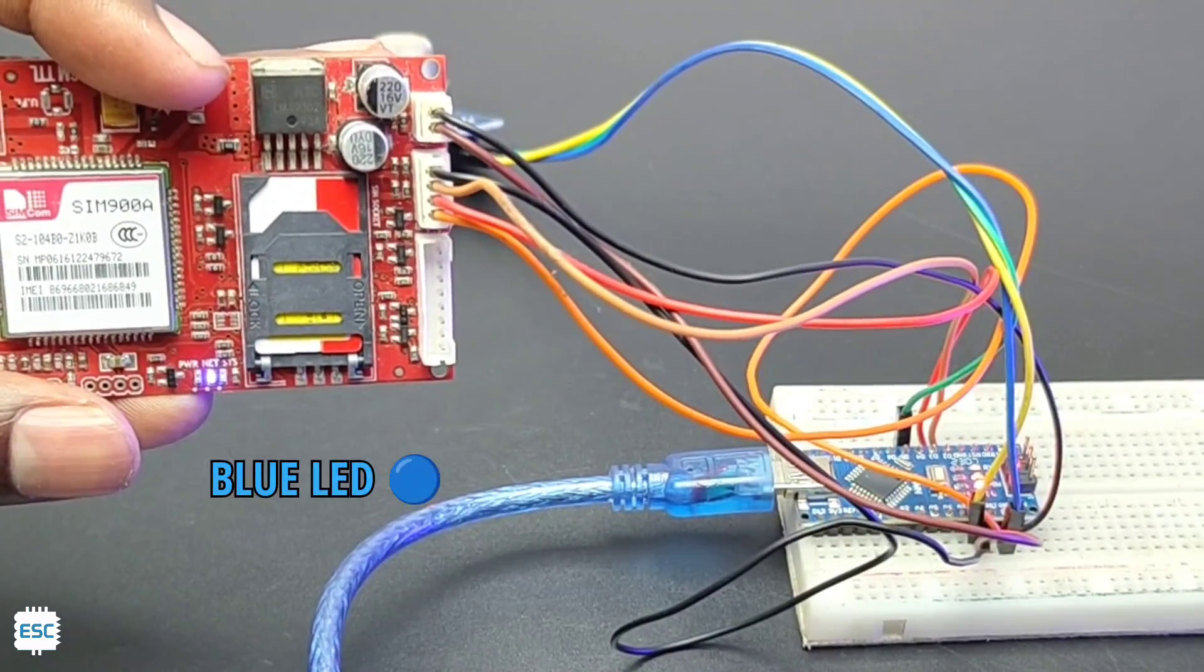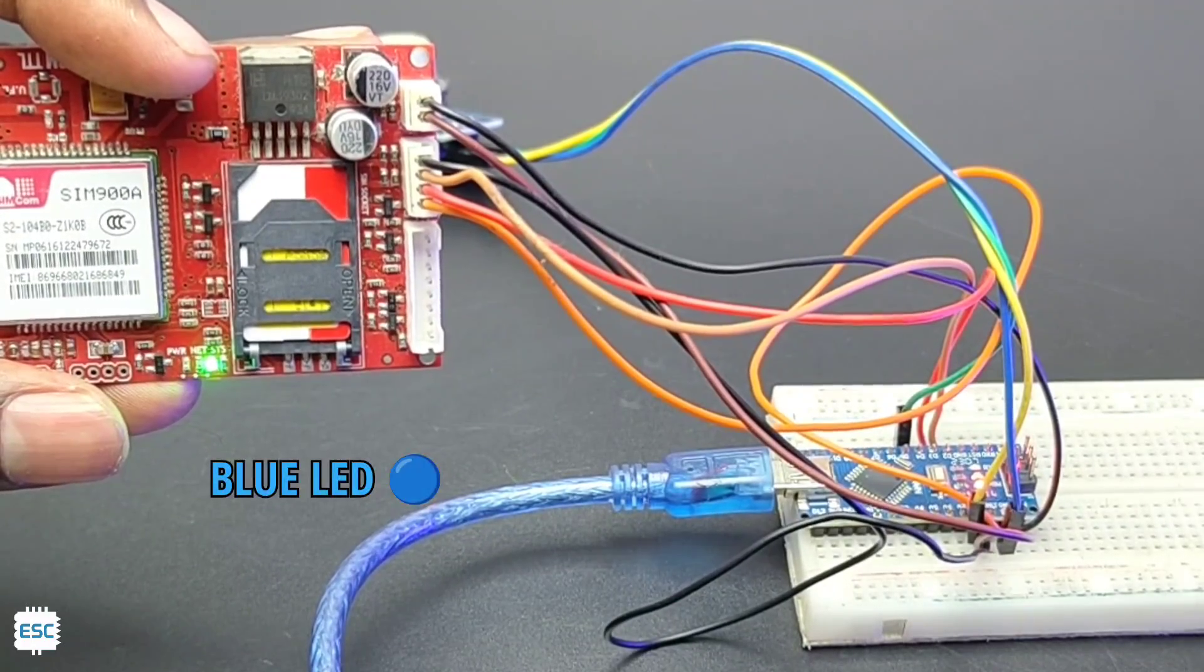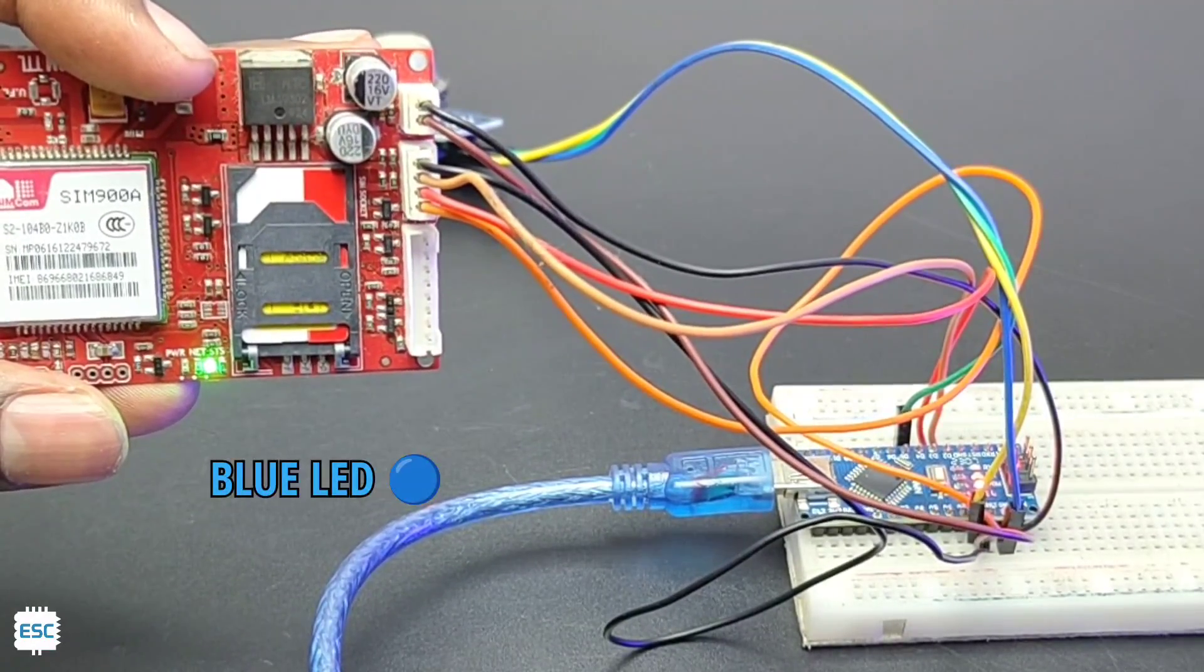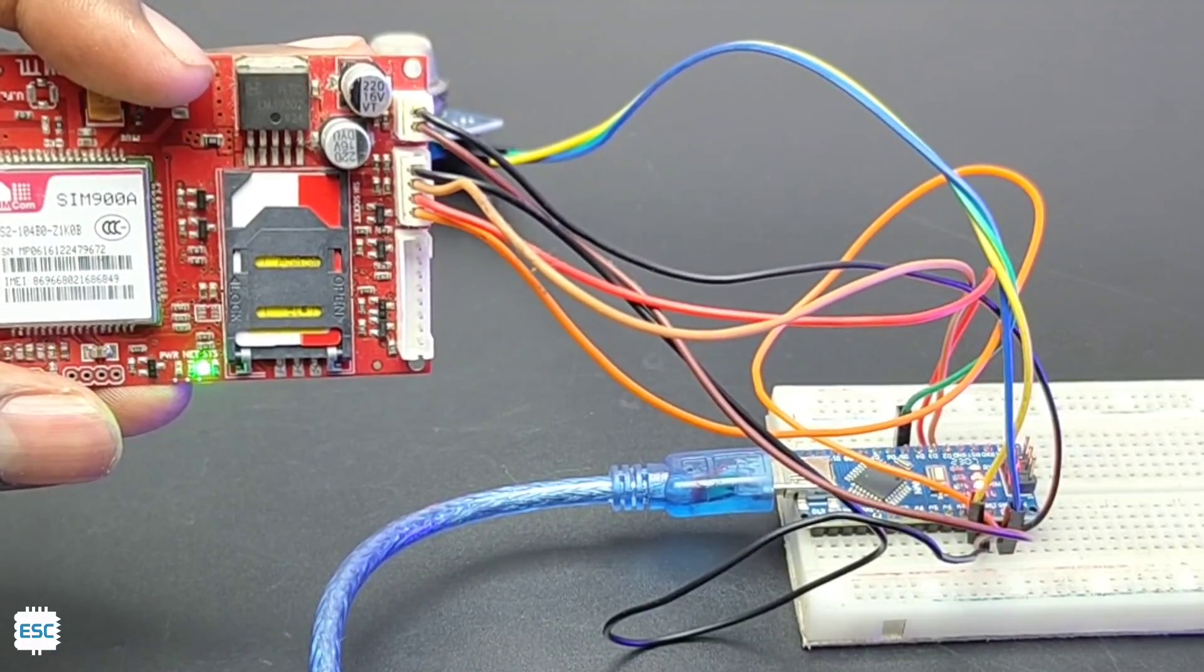At first you can see the status LED of SIM900 module blinks every second, but after connected to a network it will blink only every three seconds. So this way you can identify if the SIM900 module is working or not.